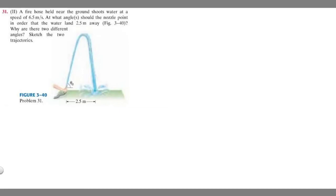In this problem, we're told the fire hose held near the ground shoots water at a speed of 6.5 meters per second. At what angle should the nozzle point in order that the water land 2.5 meters away?